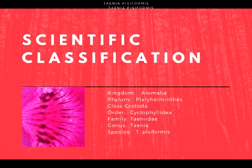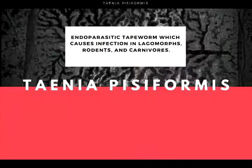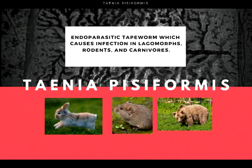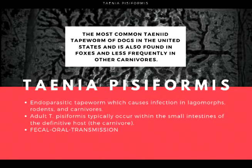Several species of cestodes parasitize the small intestine of dogs, and one of these is Taenia pisiformis. Taenia pisiformis is an endoparasitic tapeworm which causes infection in lagomorphs, rodents, and carnivores. Adult T. pisiformis typically occur within the small intestine of the definitive host, the carnivores.